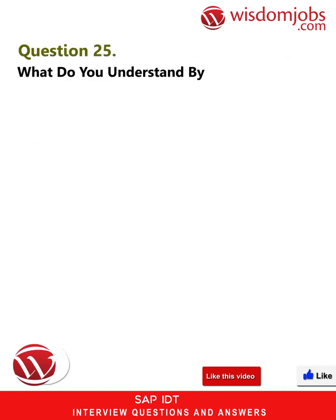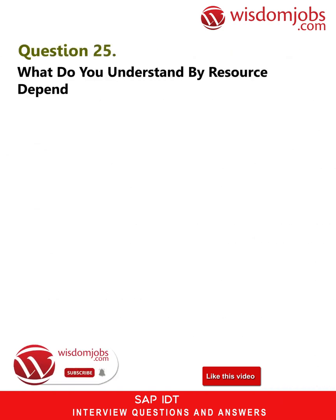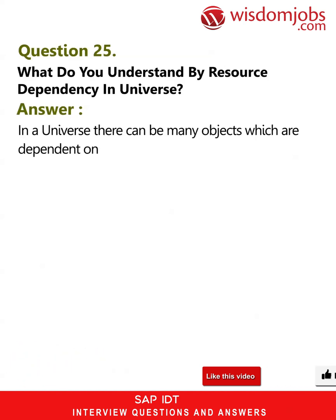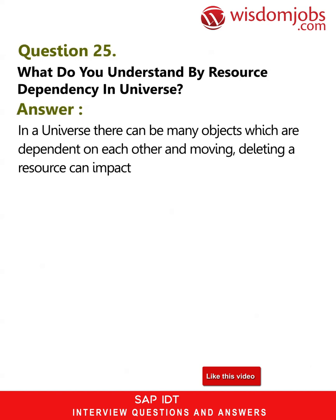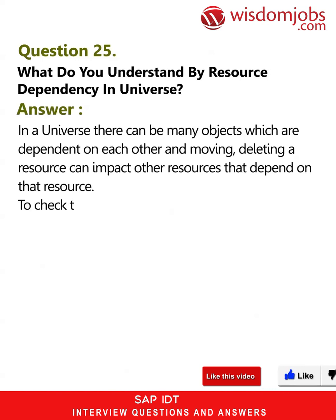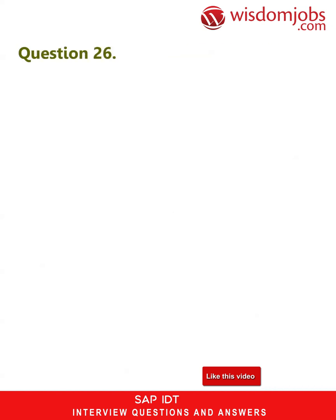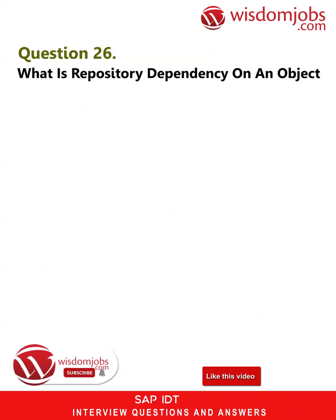Question 25: What do you understand by resource dependency in a universe? Answer: In a universe there can be many objects which are dependent on each other, and moving or deleting a resource can impact other resources that depend on it. To check the dependency between different resources, you can select Show Local Dependency.